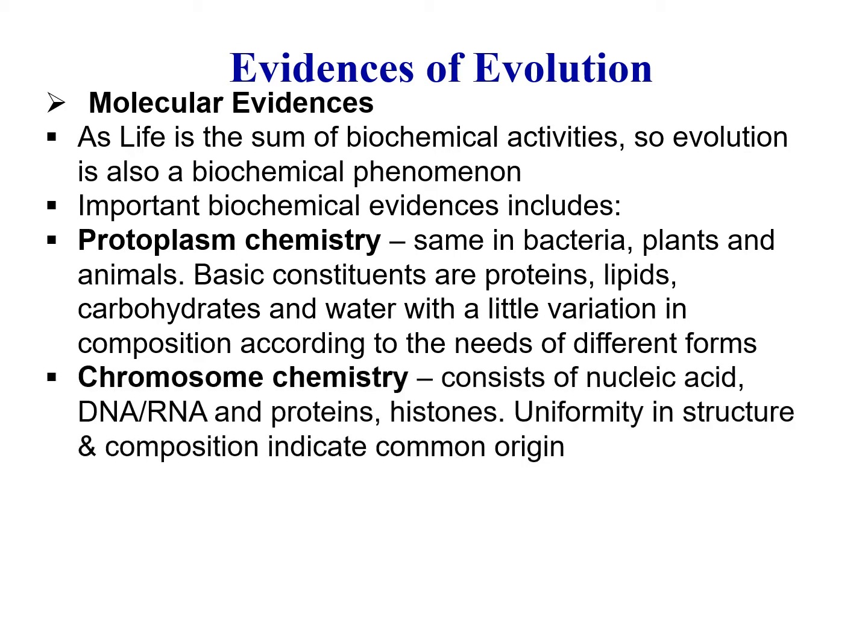If we see the chromosome chemistry, chromosomes consist of nucleic acid and proteins. The nucleic acid may be DNA or RNA, and the important proteins in chromosomes are the histones. Uniformity in structure and composition indicates common origin, so they have similar chromosome chemistry which indicates their common origin.